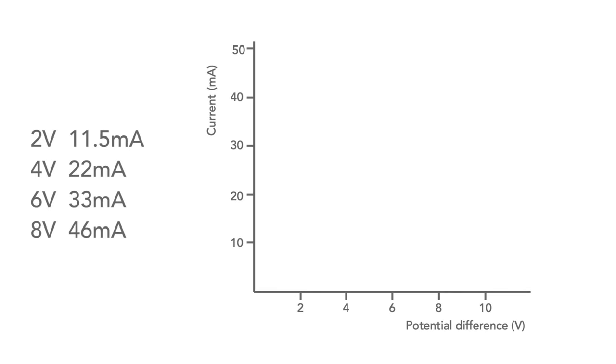We can plot these points on a graph with current on the vertical axis, and voltage or potential difference on the horizontal axis. Here we prove that within experimental error, all the points are on a straight line. The resistance, which is equal to V upon I, remains the same whatever the voltage.